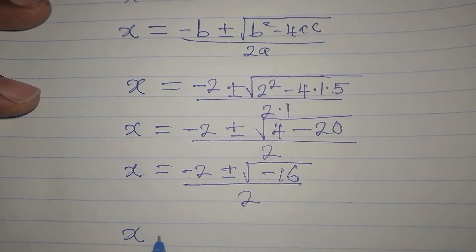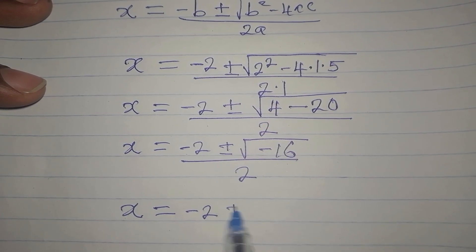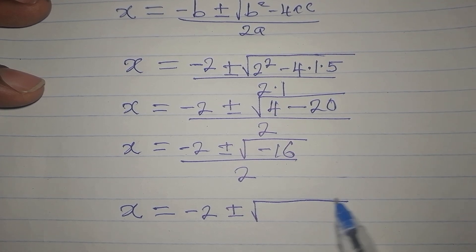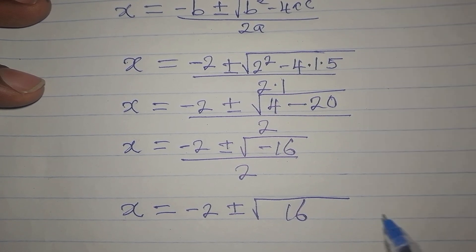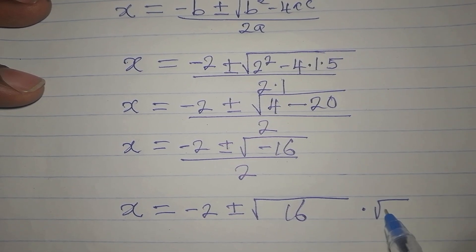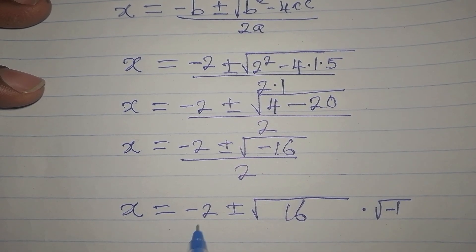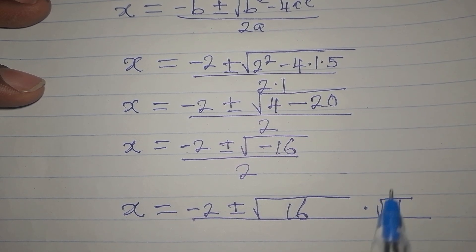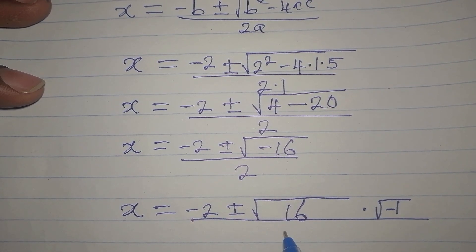We can rearrange what we have. x = -2 ± √16 · √(-1), so we can find the square root of 16. If you multiply these, it gives you back √(-16). This is divided by 2.